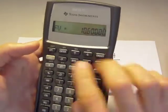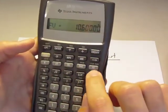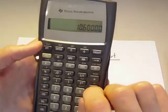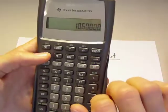Let's go ahead and clear all the stuff in our time, value, money parameters. So let's go second, clear, time, value, money. So now it's all clear. Let's go second, quit.